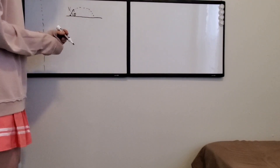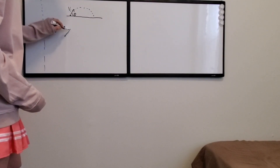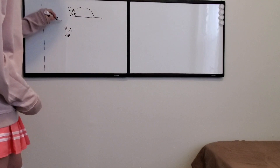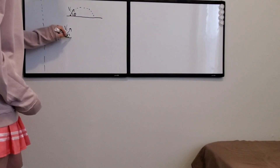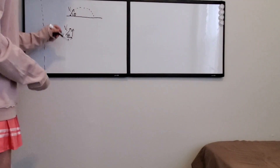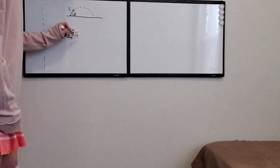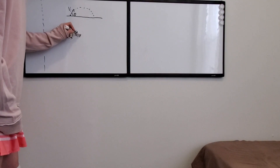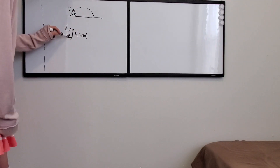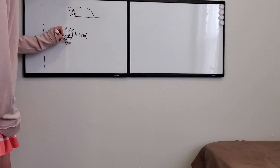We're going to start by splitting it up. We have our velocity at some angle, and we want to split it up into its horizontal and vertical parts. We do that by using cosine and sine. For the vertical part, it's going to be velocity initial times sine of theta. And for the horizontal part, it's going to be velocity initial times cosine of theta.